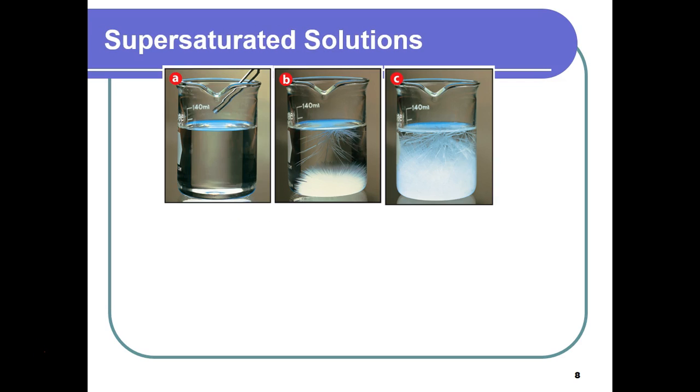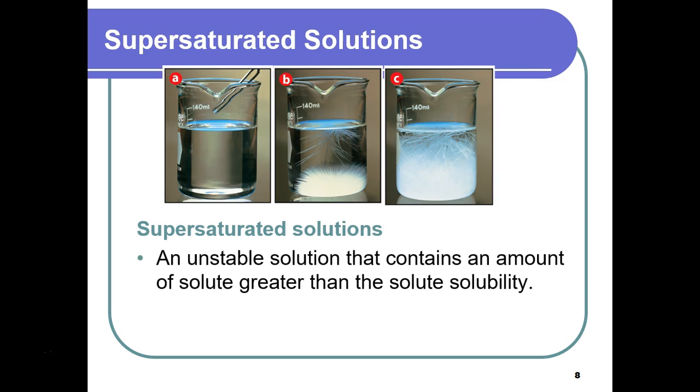The last type of solution is a supersaturated solution. This is kind of an uncommon type of solution where you're going to have an unstable solution that contains an amount more than it's supposed to. The way we've done this is you have to heat up a solution. We've looked at solubility curves before and we saw that on the curve as temperature increases, solubility for most substances are also going to increase.